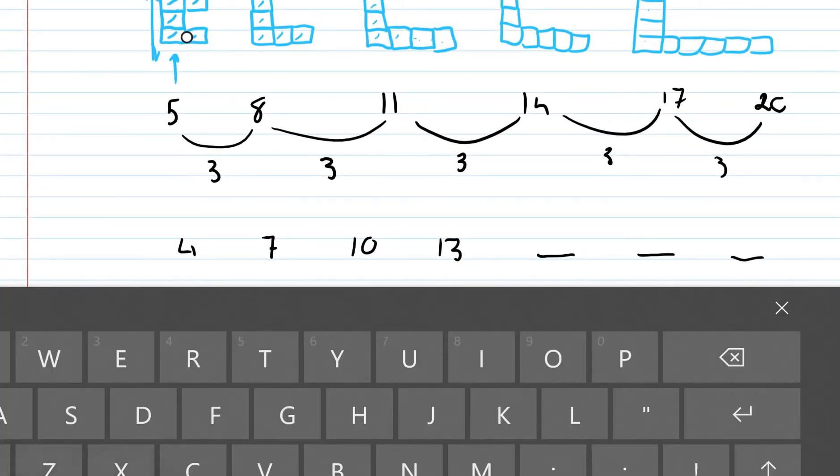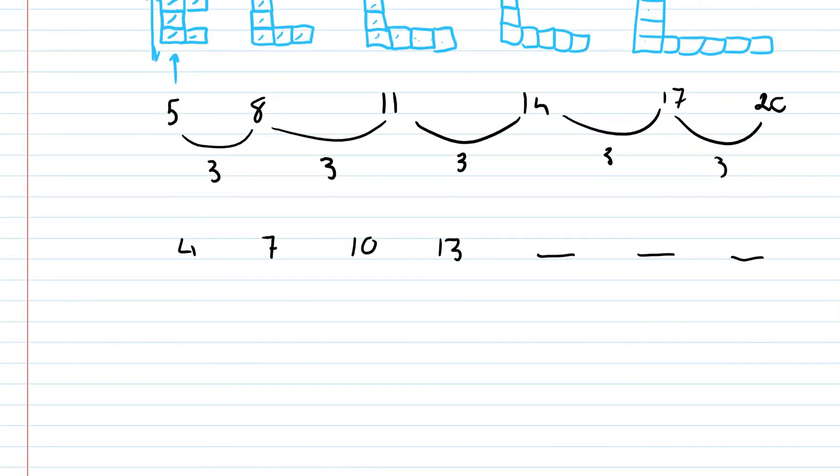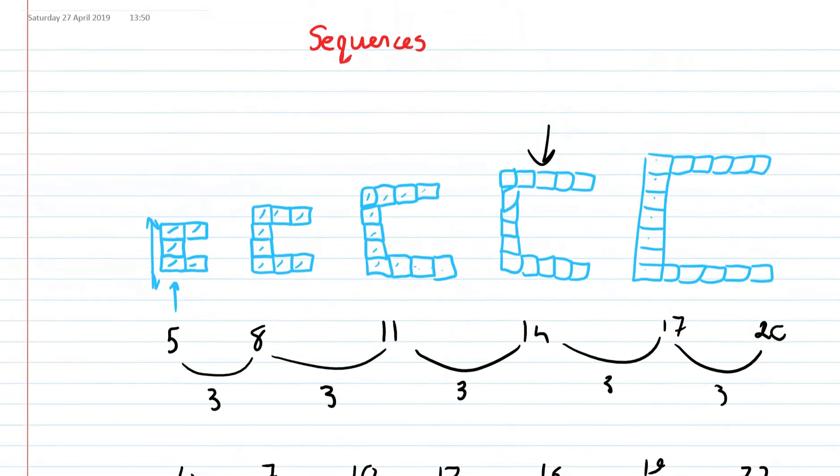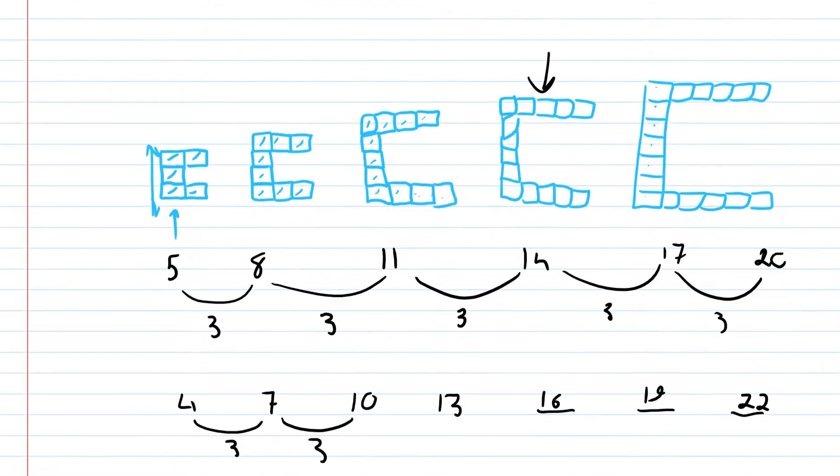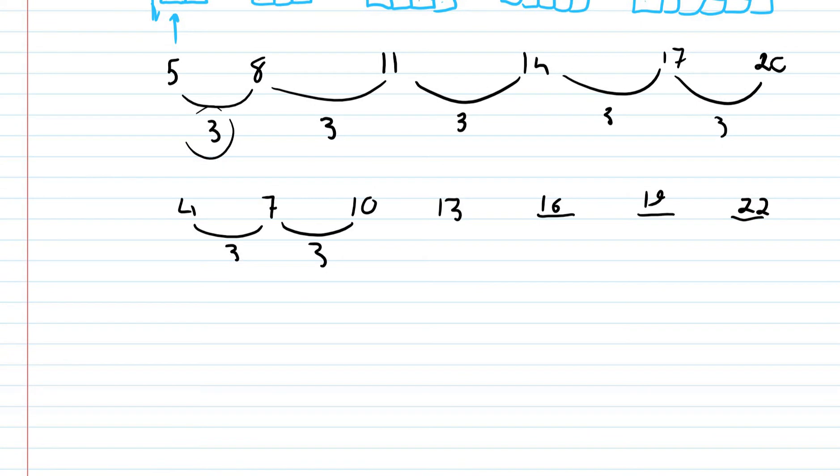Let's look at this lastly then. So, 4, 7, 10, 13. Just coincidence that we're jumping by 3 again. So, 16, 19, 22. If you notice, these patterns, we're always jumping up by a number. Jumping up by the same number.